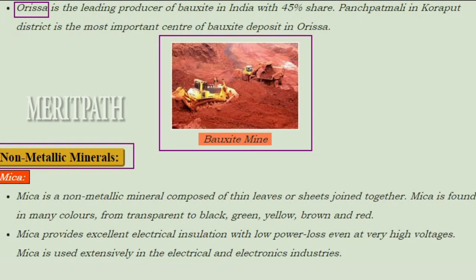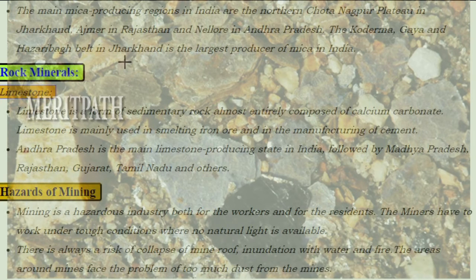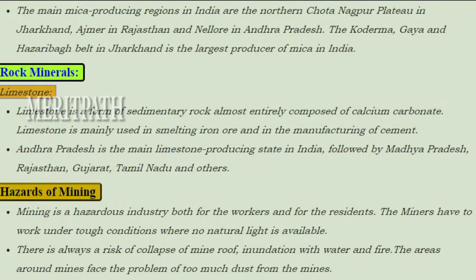Non-metallic minerals: Mica is a non-metallic mineral composed of thin leaves or sheets joined together. It is found in many colors from transparent to black, green, yellow, brown, and red. It provides excellent electrical insulation with low power loss even at very high voltages and is used extensively in the electrical and electronic industries. The main mica-producing regions in India are the northern Chhota Nagpur plateau in Jharkhand, Ajmer in Rajasthan, and Nellore in Andhra Pradesh. The Koderma-Gaya-Hazaribagh belt in Jharkhand is the largest producer of mica in India.